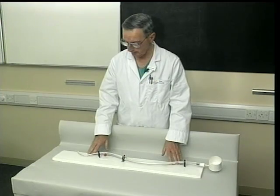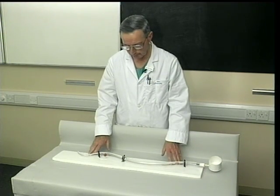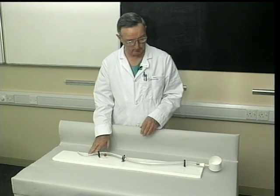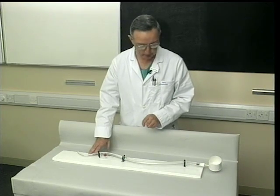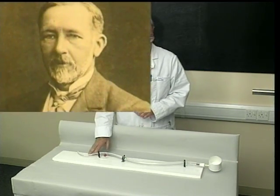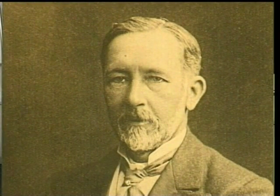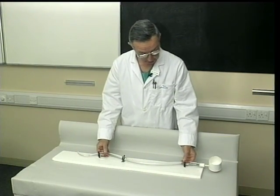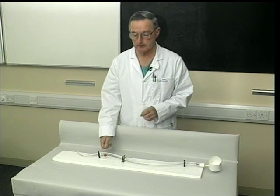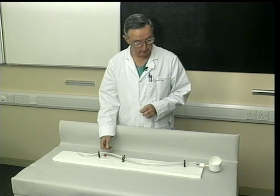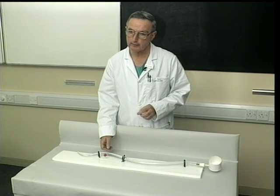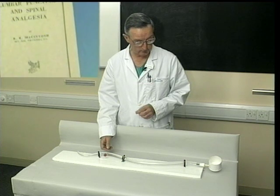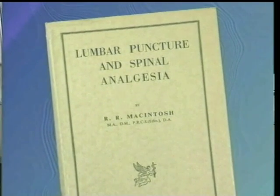Ladies and gentlemen, let me introduce the glass spine. The first description of a glass spine similar to this one was made in 1907 in the British Medical Journal by Arthur Barker, who was professor of surgery at University College Hospital in London. This one has been in the Department of Anaesthetics here since the early 1950s, where several photographs of it appeared in Professor McIntosh's famous monograph, Lumbar Puncture and Spinal Analgesia.